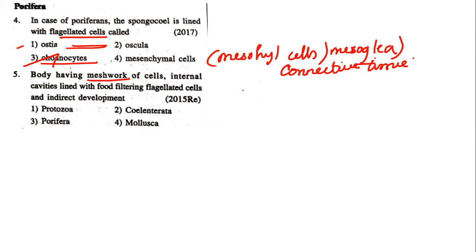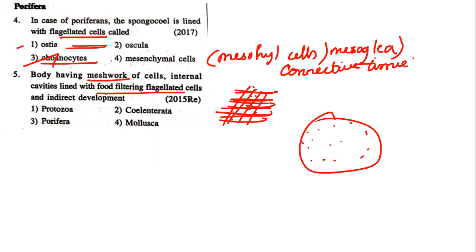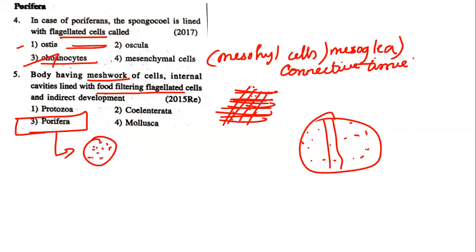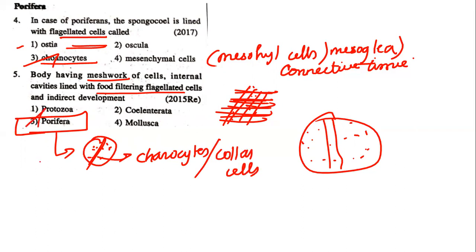Body having a meshwork — small, small pores — with internal cavities lined with food-filtering flagellated cells, and having indirect development. This description matches Porifera, because Porifera is the only phylum which contains pores all over the body — a meshwork type of pore structure. Even our skin has small pores, but that is not a meshwork. This also has flagellated cells, which are choanocytes or collar cells. So the answer is Porifera.